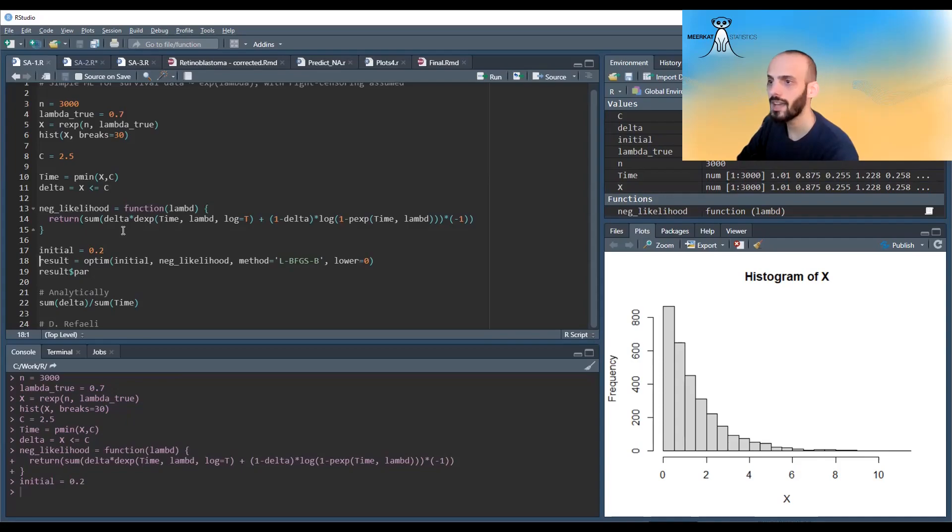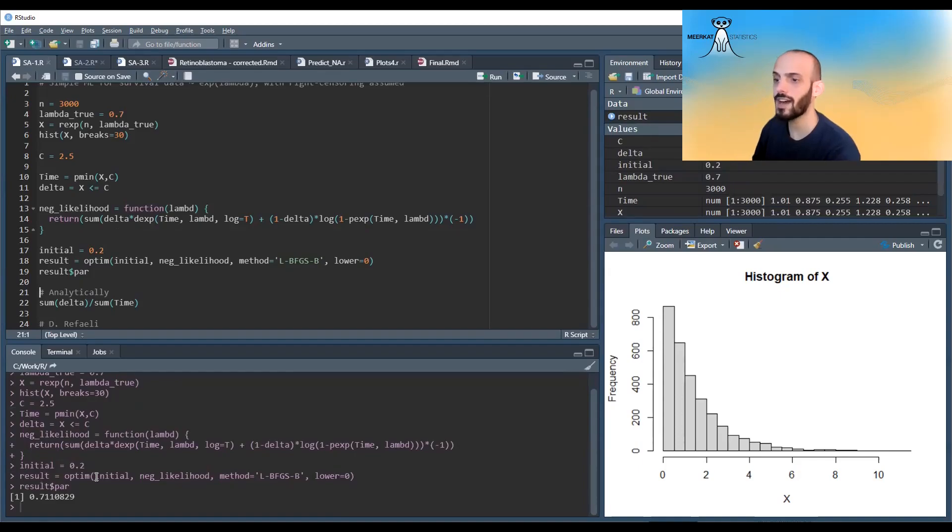We run an optimization technique and we see that for our data it gives us 0.711, very close to the 0.7 which is the true parameter. We can also compute analytically the maximum likelihood and we can see it gives almost an identical solution.